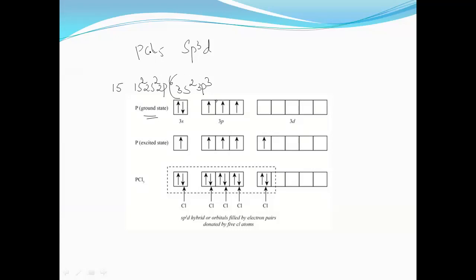In order to form bonds with five chlorine atoms, one of the electrons from the 3s orbital gets excited to the 3d orbital, resulting in five unpaired electrons in the excited state of the phosphorus atom. These five orbitals in the valence shell — one 3s, three 3p, and one 3d — undergo hybridization to form sp3d hybrid orbitals.